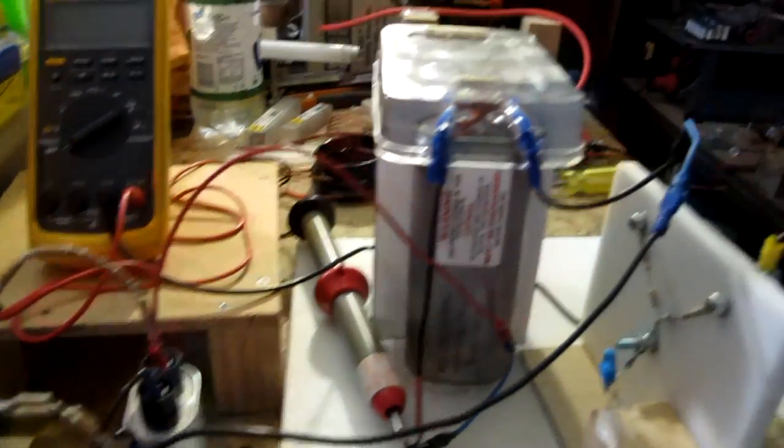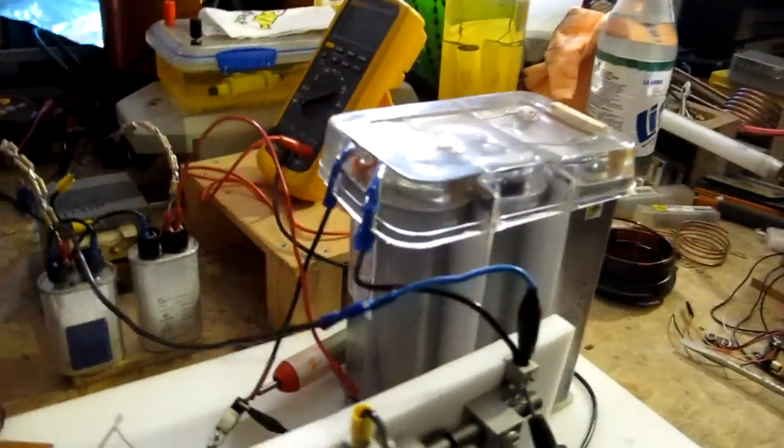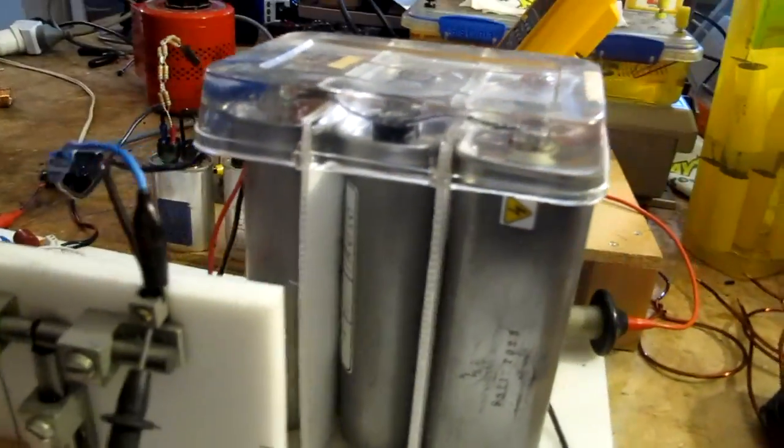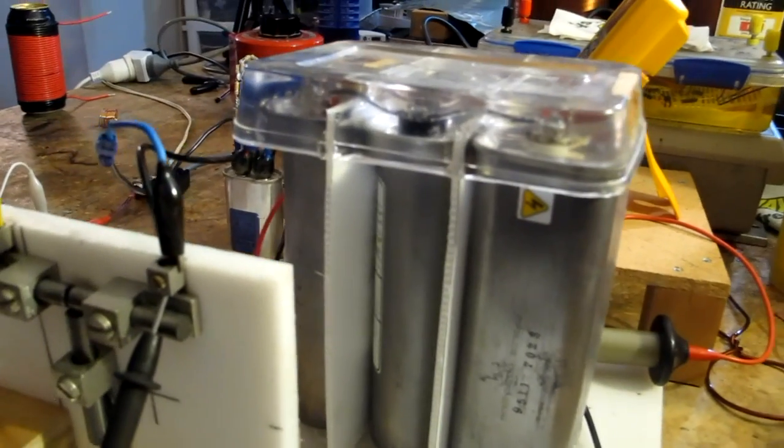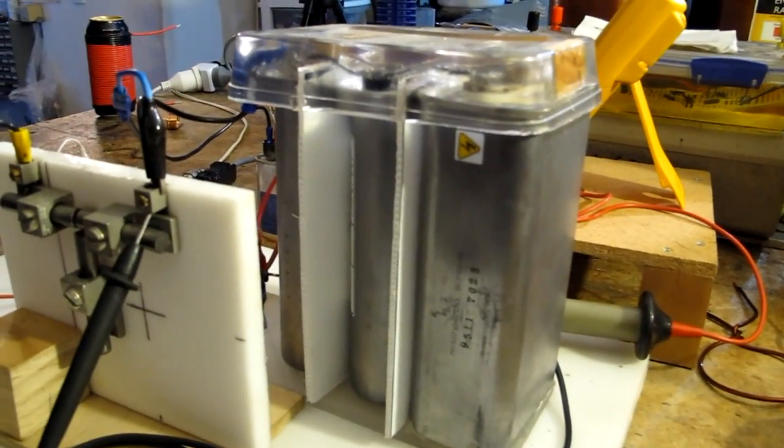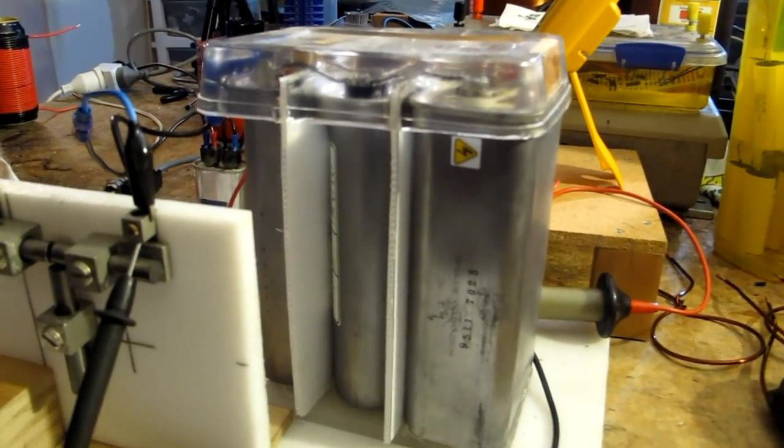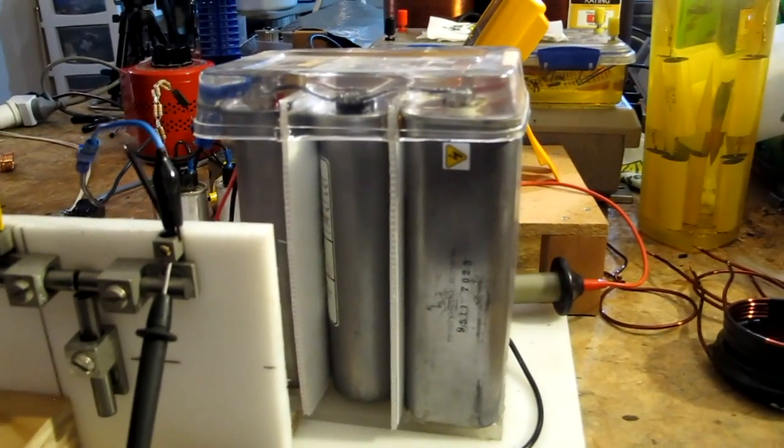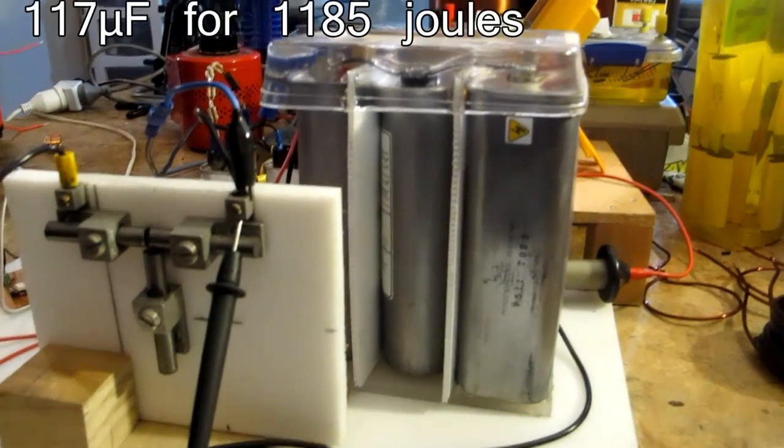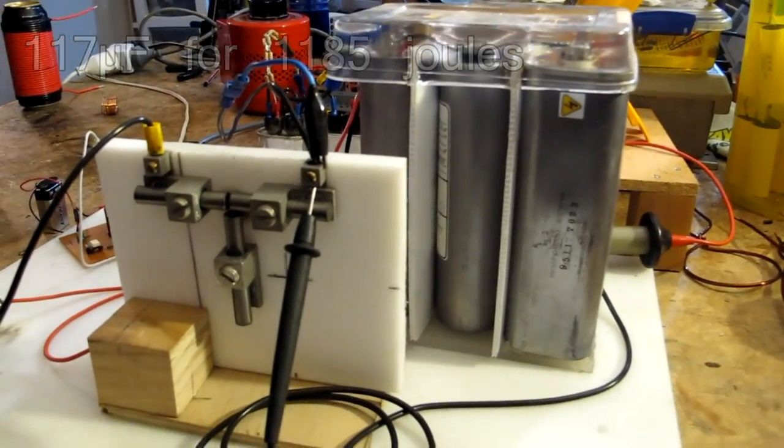And then the output of those goes to my main capacitor bank which is these bad boys. So the smallest of those is rated for 4800 volts DC and the largest about 5200. So I'm topping them out at about 4500 because I don't want to blow them up. There is around 1300 joules I think, they were 119 microfarads. I'll put up a comment with the actual values.